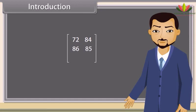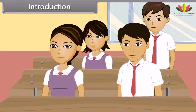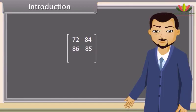Prateek, you tell me now. Teacher, 67 in science and 72 in maths. All right. Can you see, I have written your marks in this bracket. What does this represent? Anyone? This represents a matrix. Today we will learn what matrices are and their operations. Come, let's start.